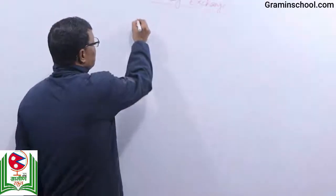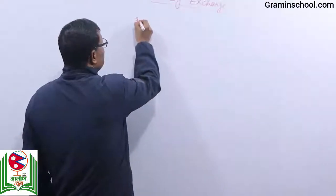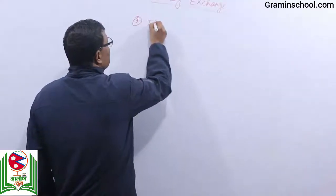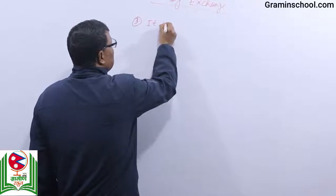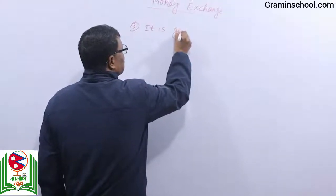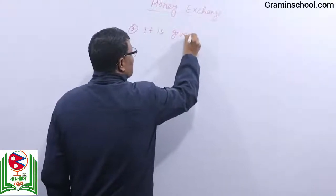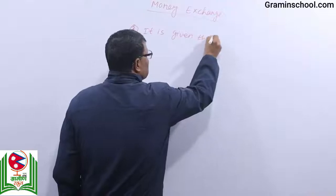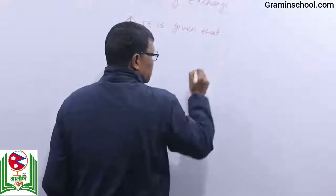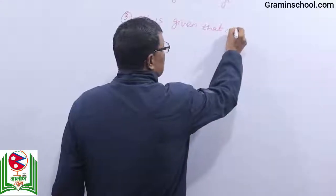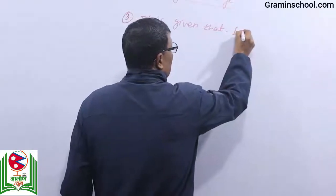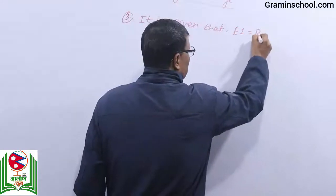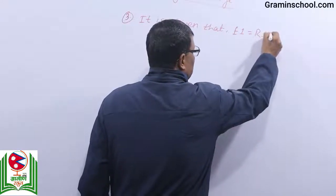Hello, next example. It is given that one pound is equal to rupees 115.